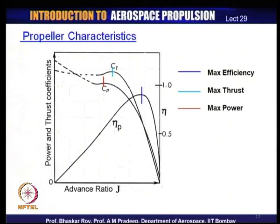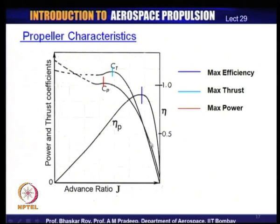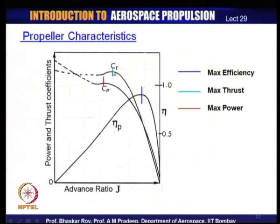The advance ratio range is decided on the basis of the aircraft's flight velocity range starting with takeoff. On the y-axis, you can see the power and thrust coefficients C_T and C_P. Two things are very important: efficiency maximizes at a certain flight velocity or advance ratio, whereas the thrust coefficient and power coefficient actually maximize at different values of advance ratio. At lower advance ratios, performance is somewhat uncertain, shown by dotted lines.